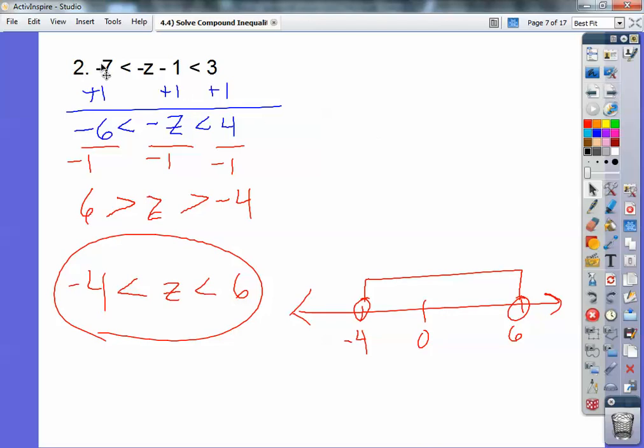And then negative 7 plus 1 is negative 6. Be careful. There's still a negative in front of that z. And 3 plus 1 is 4. And remember, when you divide by a negative, it automatically flips the inequalities to the other direction. And then here, a negative divided by a negative is a positive, and a positive divided by a negative is a negative. And we always like to have the smaller number on the left, and negative 4 is smaller than 6.